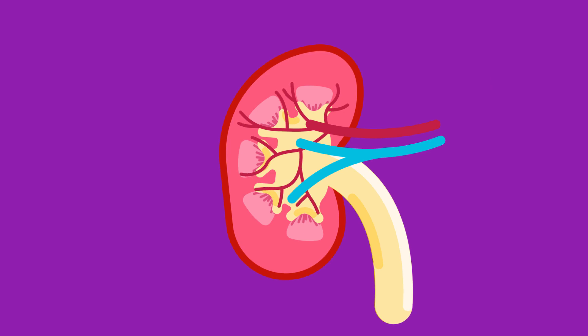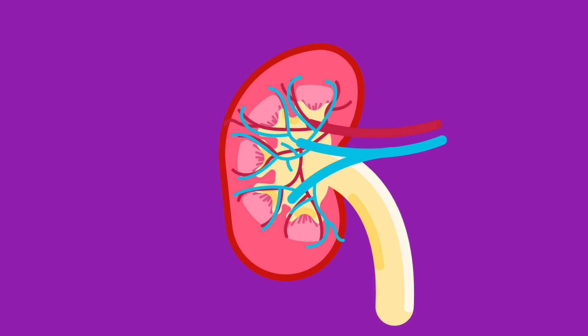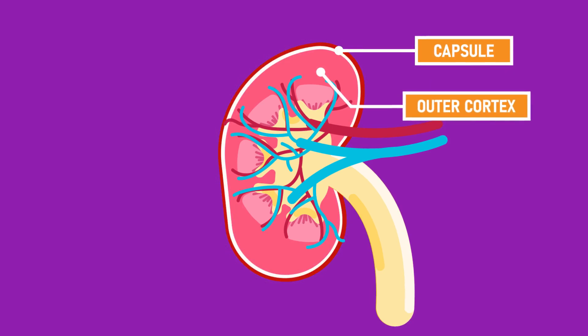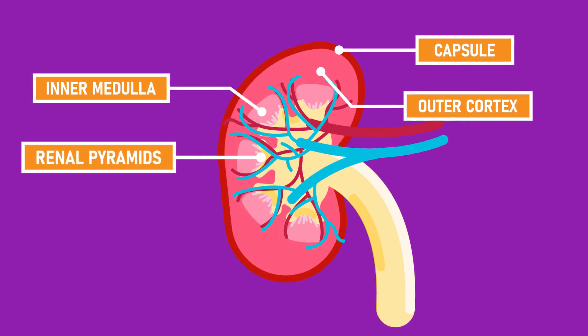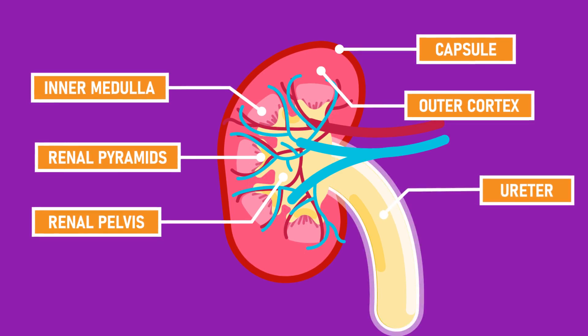The artery supplies the kidney with blood and the vein carries it out. The structures of a kidney include a capsule, outer cortex, inner medulla, renal pyramids, renal pelvis, and the ureta.